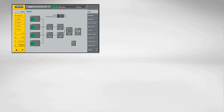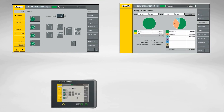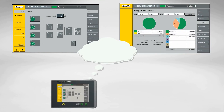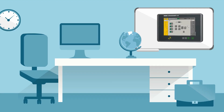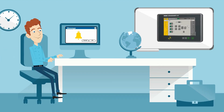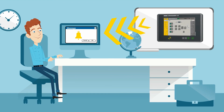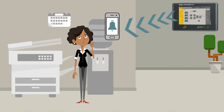Additionally, built-in energy monitoring capabilities make it quick and easy to track compressed air consumption, energy costs, and analyze trends. The messaging capabilities mean your maintenance team is always aware of warnings, alarms, and service notifications.